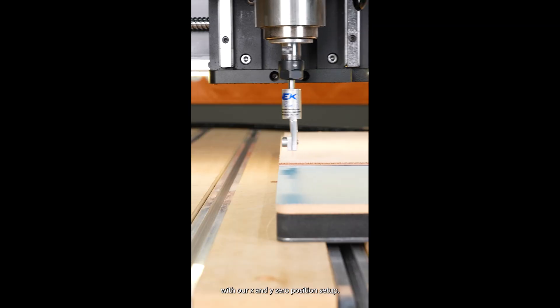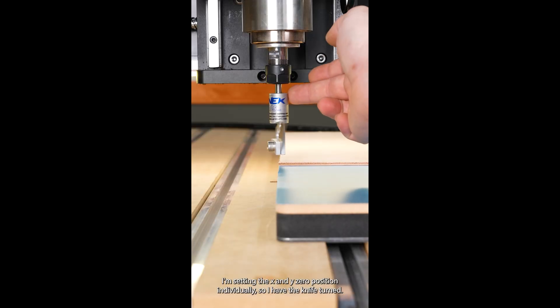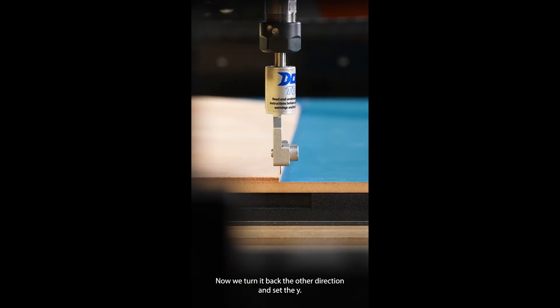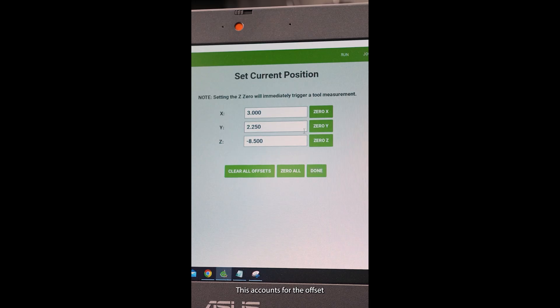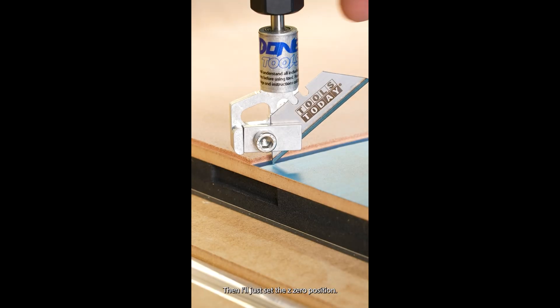With our X and Y zero position setup, I'm setting the X and Y zero position individually. I have the knife turned, now we turn it back the other direction and set the Y. This accounts for the offset so that we don't have to set that in our design software.